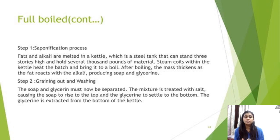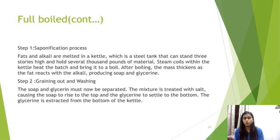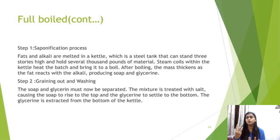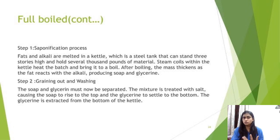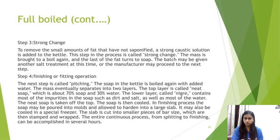Step two — graining out and washing: the soap and glycerin must now be separated. The mixture is treated with salt, causing the soap to rise to the top and glycerin to settle to the bottom. The glycerin is then extracted from the bottom of the kettle. In the full-boiled kettle process, there is production of a by-product — glycerin — which is why this process is most commonly and widely used.